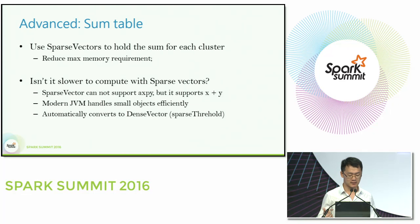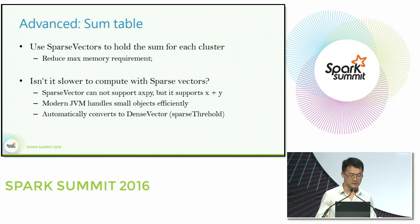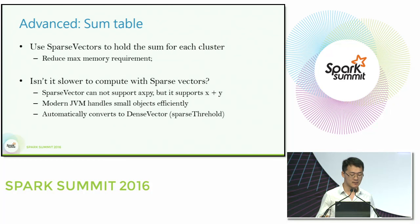We can also convert the sum table to use sparse vectors to reduce maximum memory requirements on each worker. This is a more advanced optimization. The goal is the same: reduce memory. However, using sparse vectors for the sum table can be slower because AXPY operations create many small temporary objects. Even though modern JVM handles small objects efficiently, we provide a mechanism to automatically convert sparse vectors to dense when their density reaches a threshold, via an expert parameter called sparse threshold.